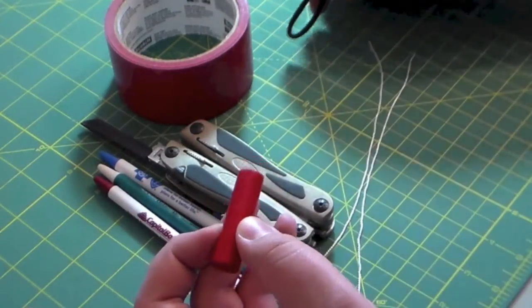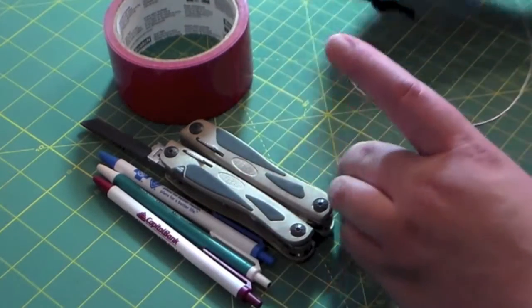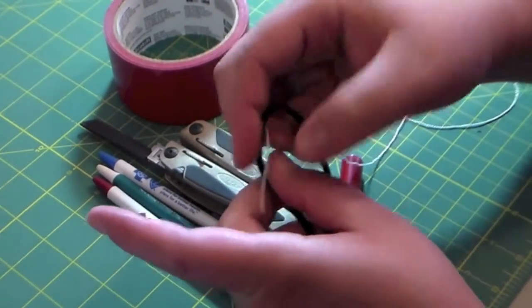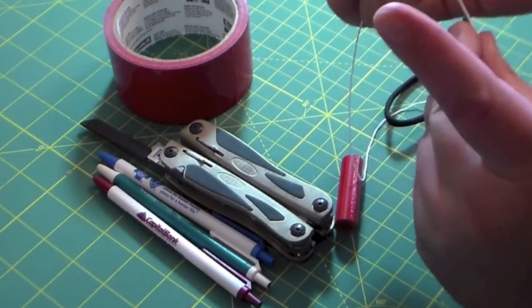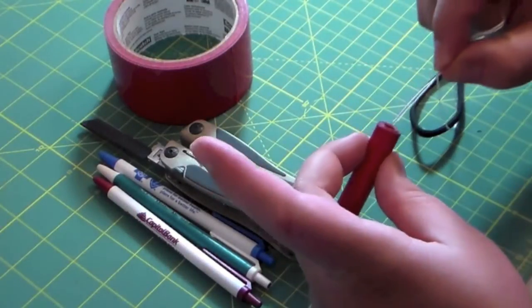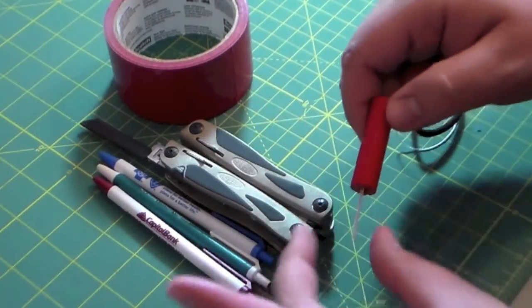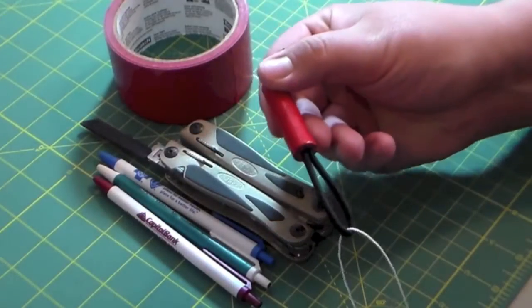Now there is an easier way and that is by taking that inner strand of paracord, running it through the larger piece of paracord, and then you want to take these inner strands and you want to drop them down the tube and out the other side. Then when you grab these you just take it, pull, and it pulls them right through.